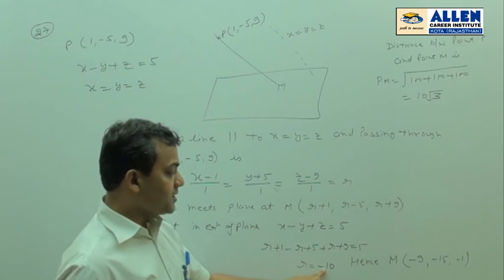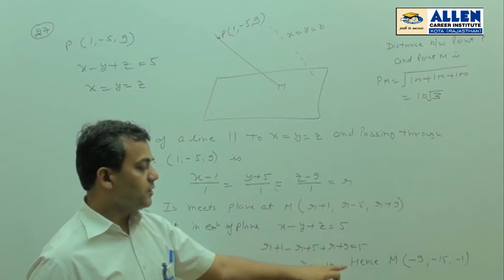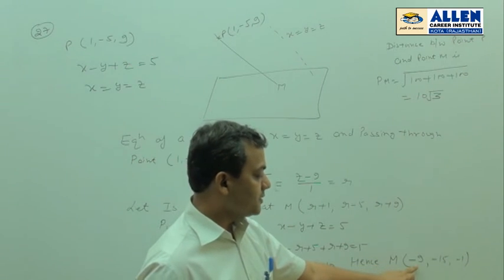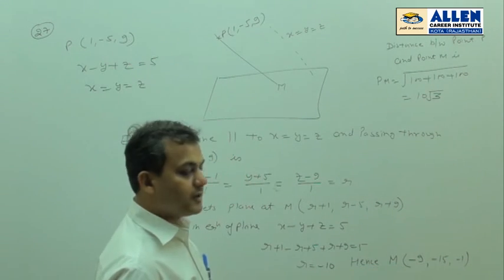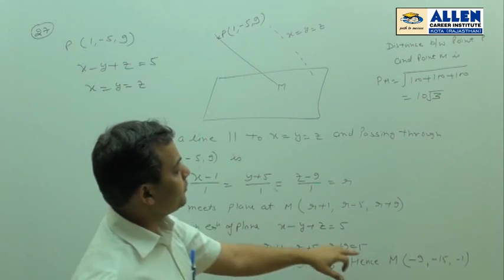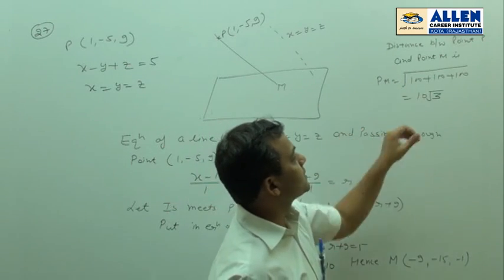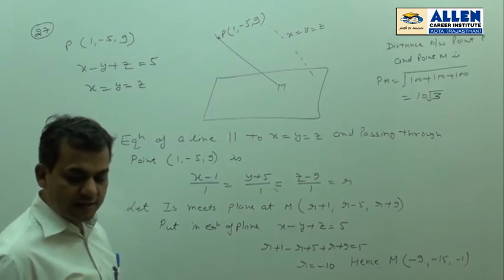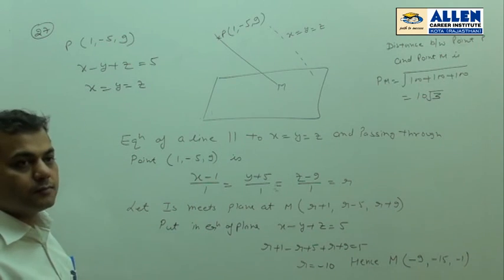When we put R equal to minus 10 in coordinates of M, we get coordinates of M as (-9, -15, -1). Now, finding the distance between point P and point M, which gives us clearly 10 root 3, that is in option 2.